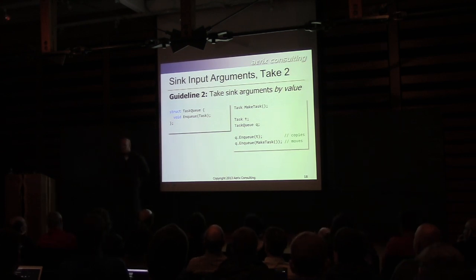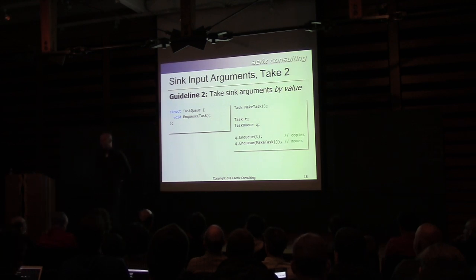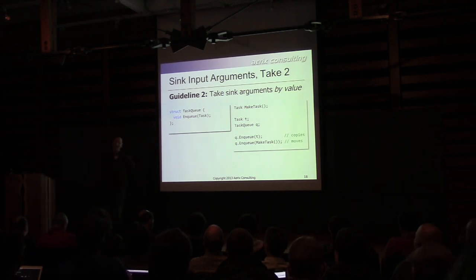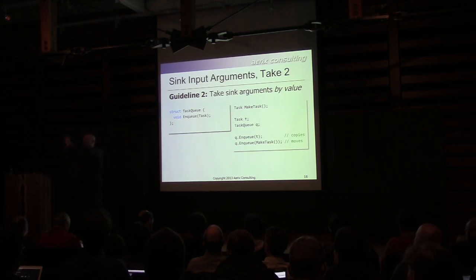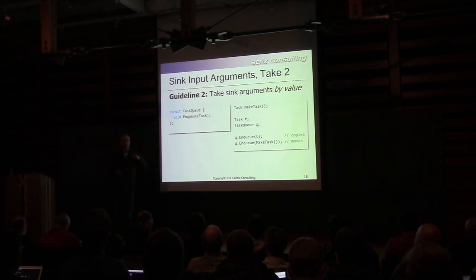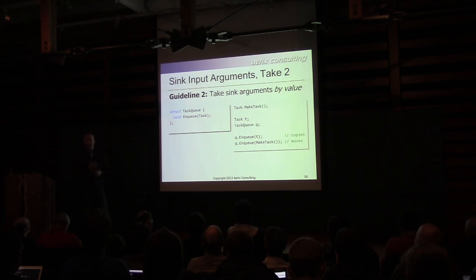Chandler suggests changing the standard so you don't get two moves. Even without that change, the speaker doesn't care about the extra move. Guideline: take sink arguments by value. Unless you have some extenuating circumstance, this is generally good advice when designing interfaces. A unique pointer can also make 'sink' very clear semantically, though the speaker personally doesn't like pointers. Passing by value also ensures you know you're the only one holding the value, simplifying implementation if you're worried about threading.